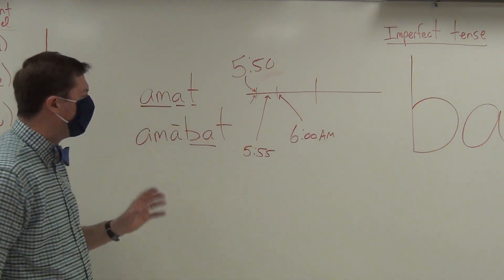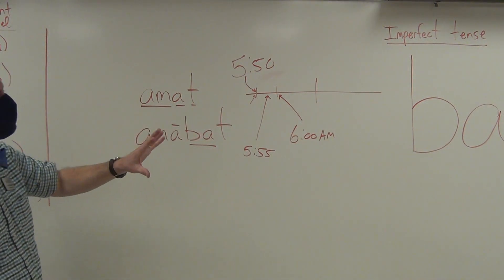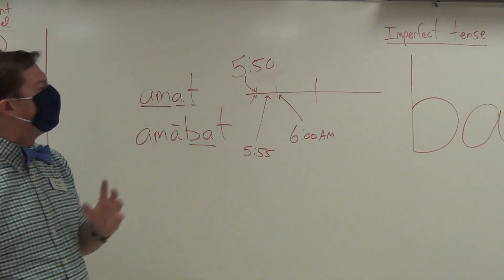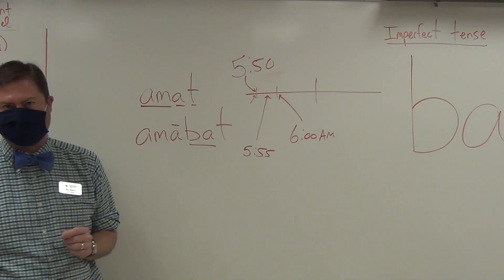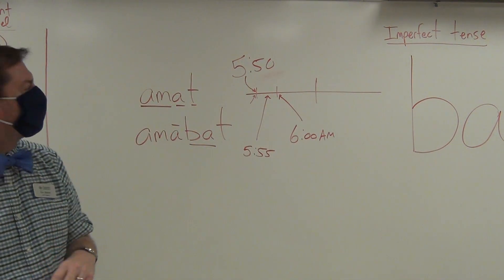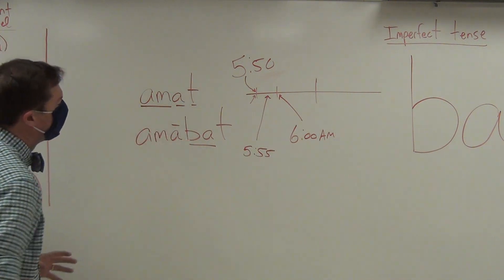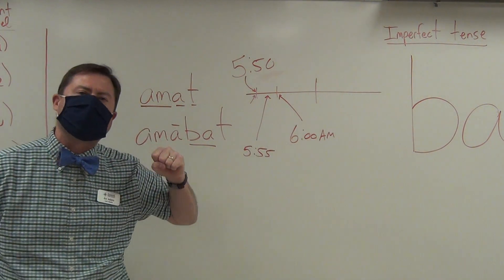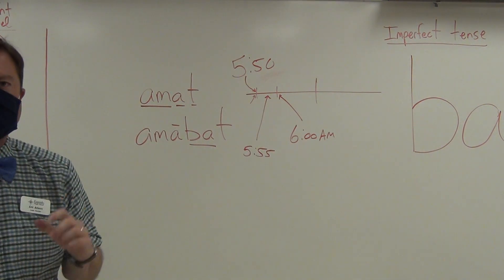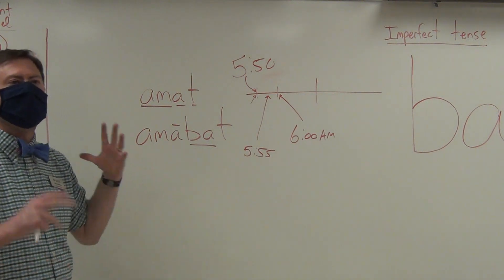And so these are the ways by which you translate the imperfect tense. And again, why is the imperfect tense so easy to recognize? Because you will see BA—that BA is like a huge fist that comes and punches you in the face and lets you know that it is imperfect action.